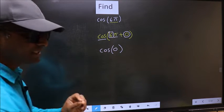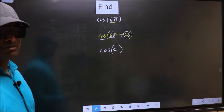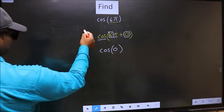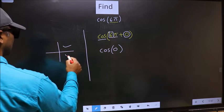6 is even, and all the even multiples of π lie in either the first or the fourth quadrant.